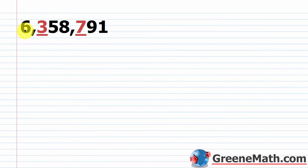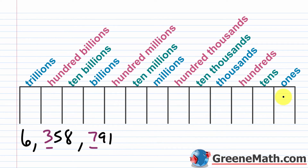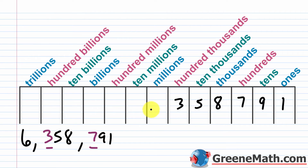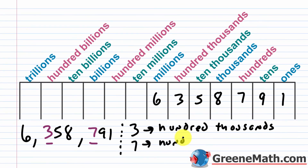Next example: 6,358,791. Starting with the rightmost digit, 1, in ones; then 9 in tens, 7 in hundreds, 8 in thousands, 5 in ten thousands, 3 in hundred thousands, and 6 in millions. For the underlined digits: the 3 is in the hundred thousands place, and the 7 is in the hundreds place.